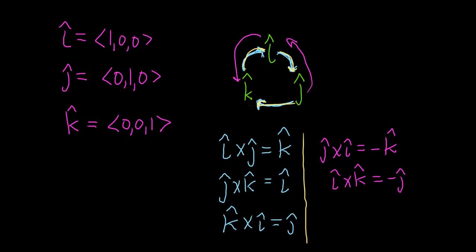And last but not least, if you go from K to J, so k to j, that's going to give us i hat but there is a negative sign.